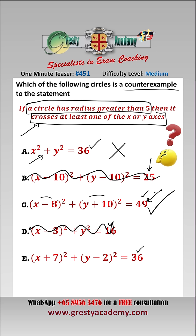And let's have a look at E. Well, basically the center of this circle is at (-7, 2) with a radius of 6. It will pass through the x-axis.